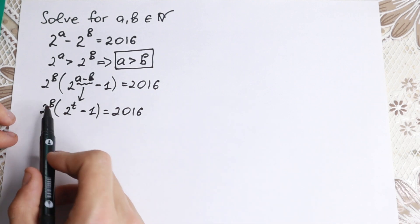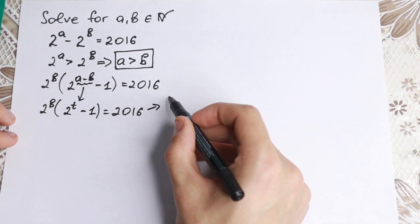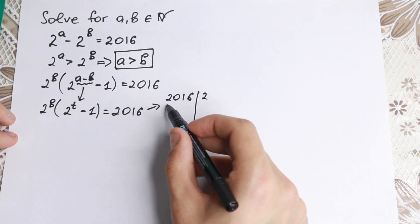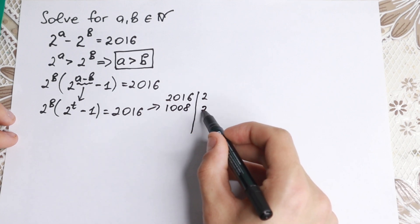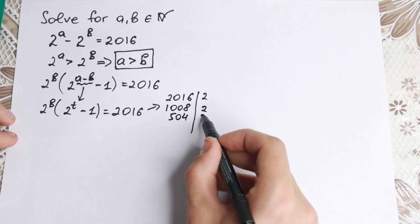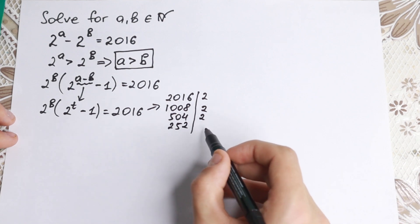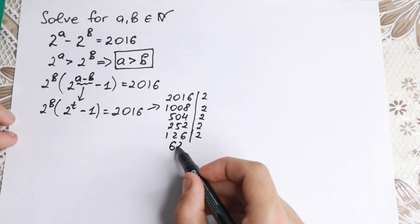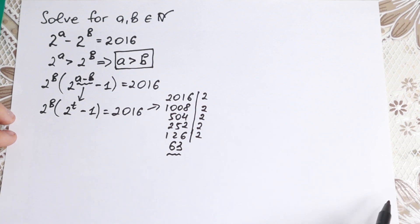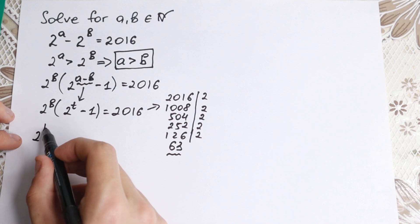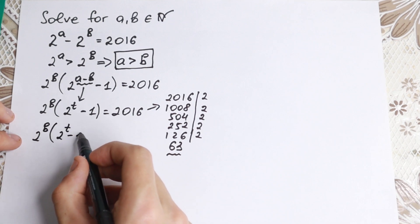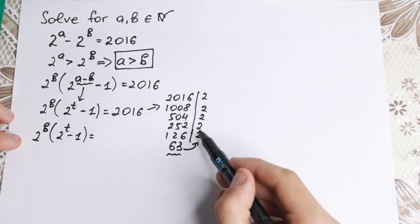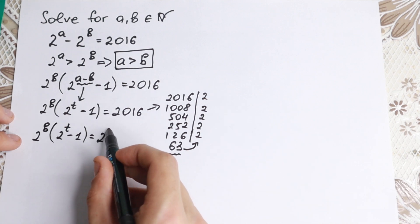We need to extract the power of 2 from 2016. Dividing: 2016 ÷ 2 = 1008, ÷ 2 = 504, ÷ 2 = 252, ÷ 2 = 126, ÷ 2 = 63. That's an odd number, so we stop. We can express 2016 as 63 times 2 to the 5th power. This is the key moment.